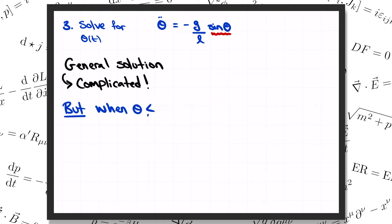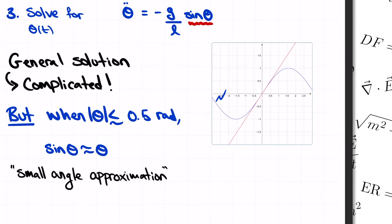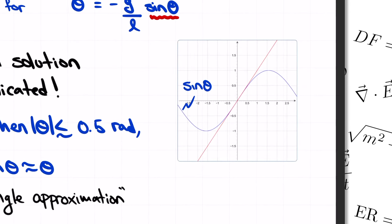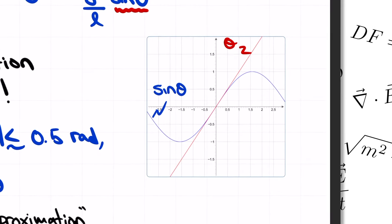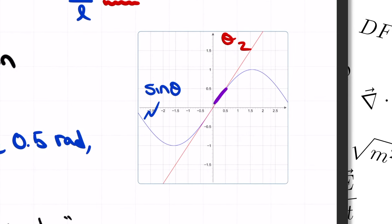But there is one special case where we can write down a simple solution, and that's when theta is small, less than half a radian or so, or around 30 degrees. In other words, if the pendulum doesn't get very far away from equilibrium. In that case, we can apply what's called the small angle approximation, which is the fact that sine of theta and theta itself are very close together when theta is small. The easiest way to see this is just to plot sine of theta and theta on the same graph. In general, the two curves look nothing like each other. But near the origin, in this little window of around half a radian or so, you can see that they're right on top of each other.